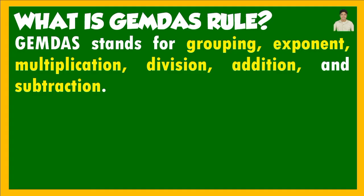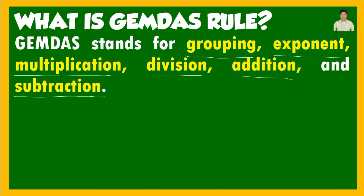So that is what GEMDAS means. The first one is Grouping — there are grouping symbols that we need to consider when performing operations, especially when grouping symbols are present. Then we also have Exponent, which is why we discussed base and exponent first since it is related to the GEMDAS rule. Then the four fundamental operations: Multiplication, Division, Addition, and Subtraction.